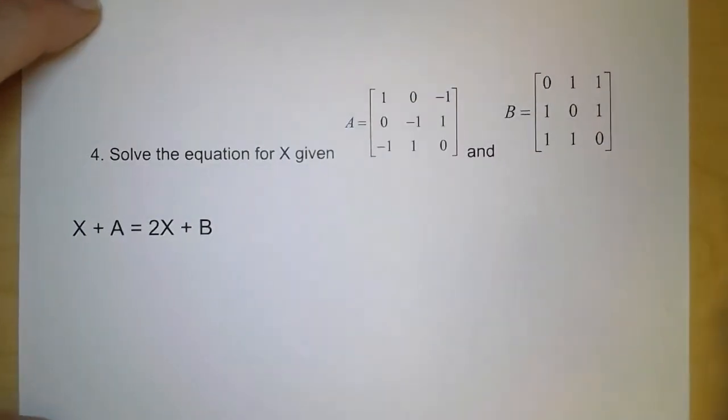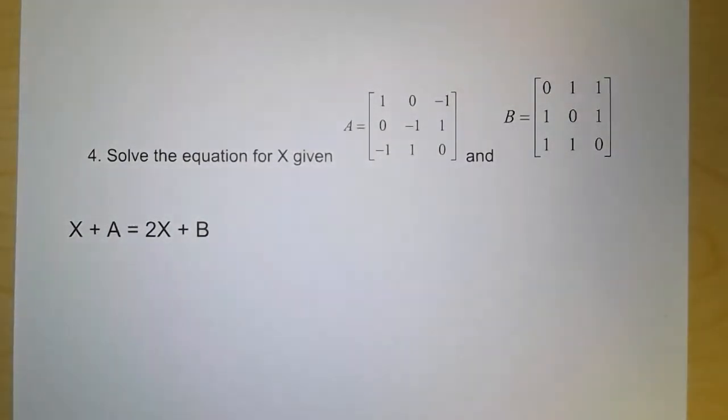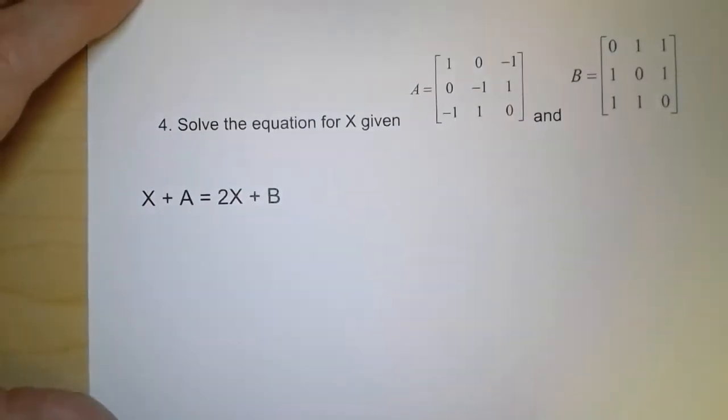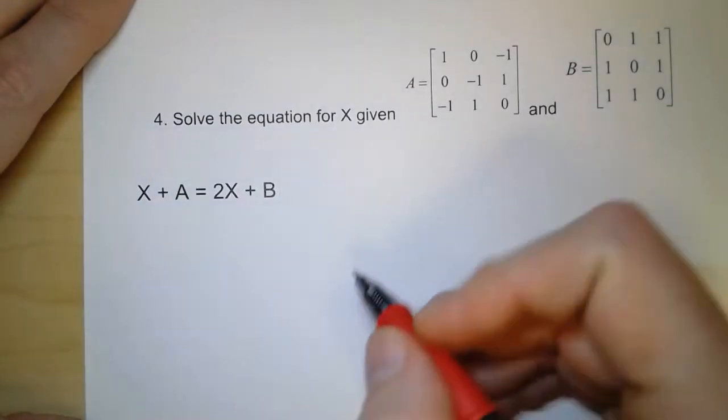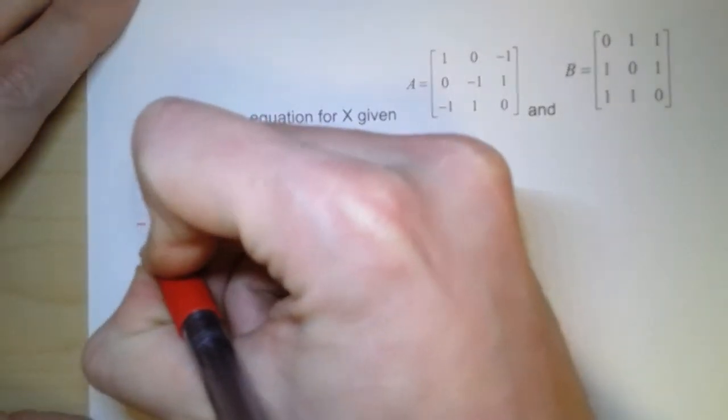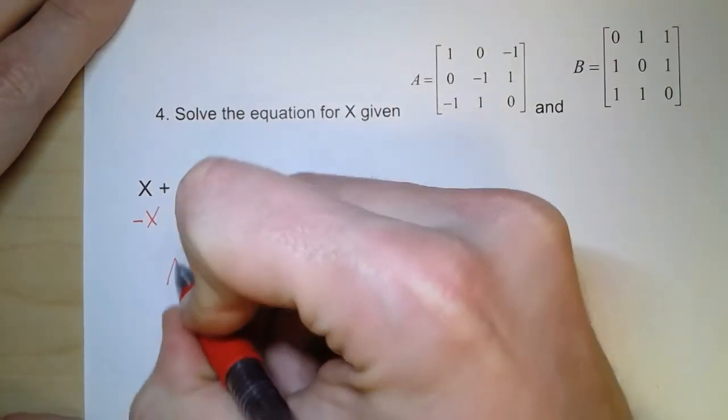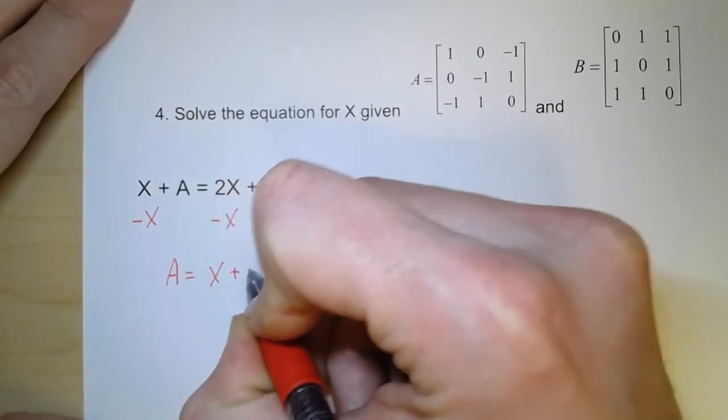So down here, we want to solve for x. Now notice that x is capitalized. Any time we see a capital letter, what that means is we're talking about a matrix. Any time we have a lowercase letter, that means we have a number of some kind. So what we have is we have this equation right here. So what I'm going to do is I'm going to solve this equation algebraically first. I'm going to subtract capital X from both sides.